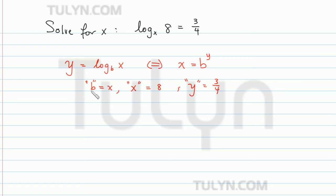So if we want to replace this b, x, and y into this exponential equation here, what this would end up being is x, which is 8, is equal to b, which is x to the y, which is 3 fourths.